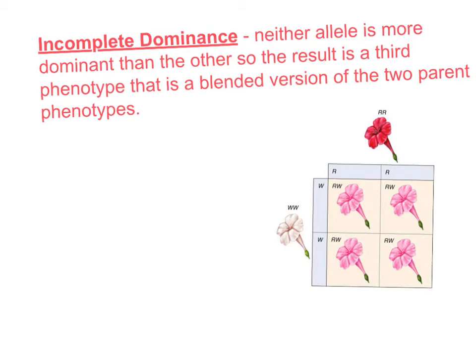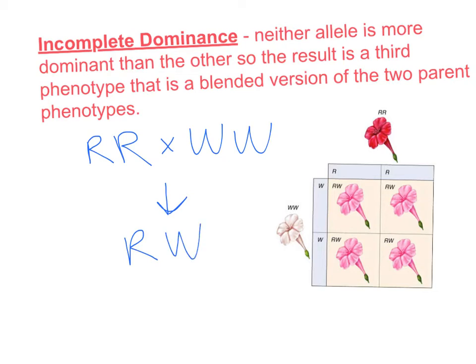The second type of inheritance is called incomplete dominance. In this type, neither allele is more dominant than the other, so the result is a third phenotype that is a blended version of the two parent phenotypes. In this case, we have a red snapdragon crossed with a white snapdragon, and the result is 100% pink snapdragons. Notice that in this type of inheritance, we use two different letters to represent both of the parents.